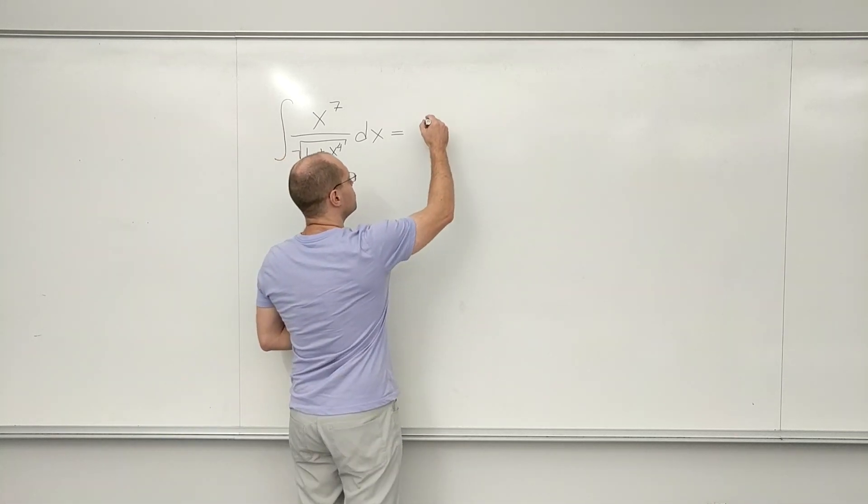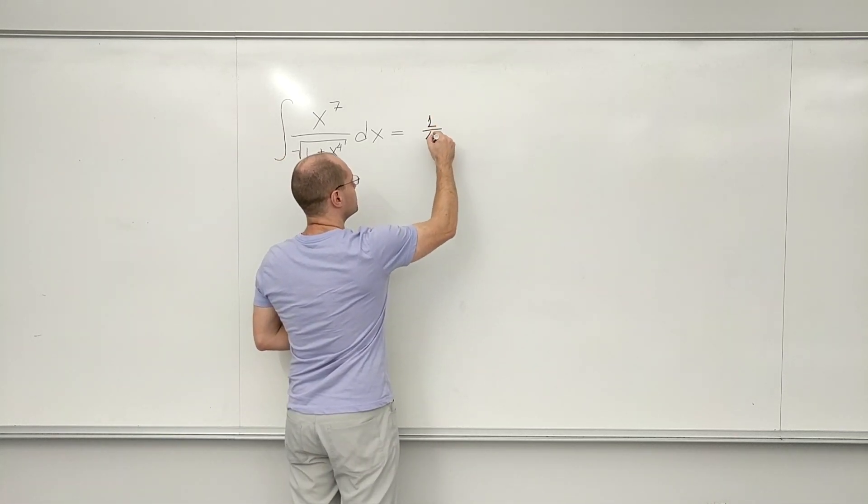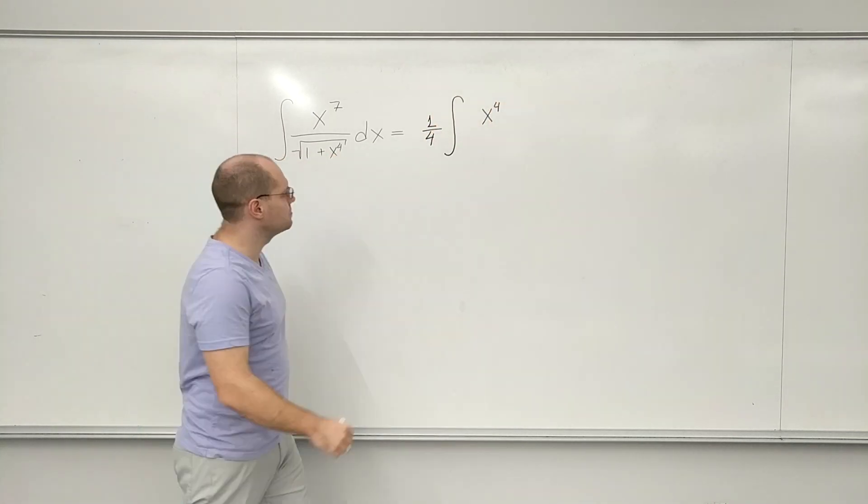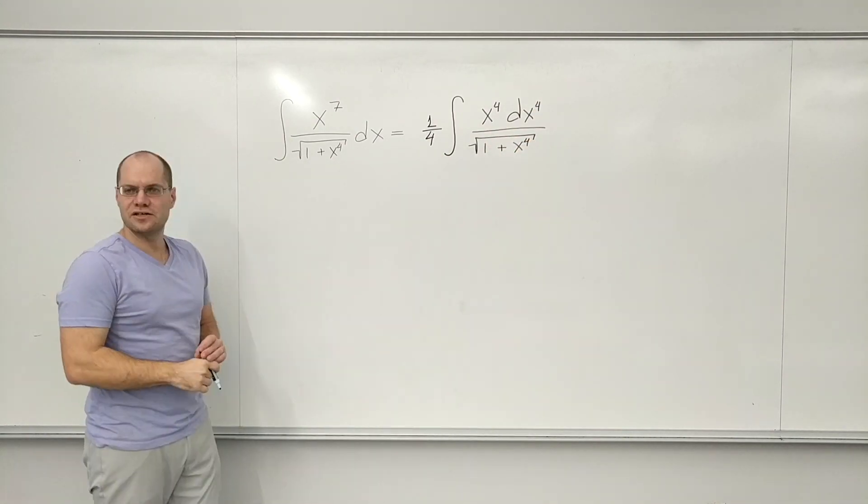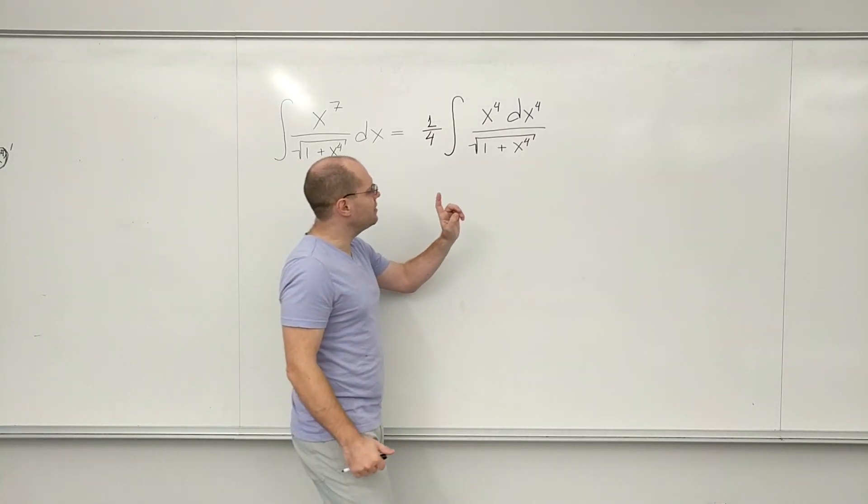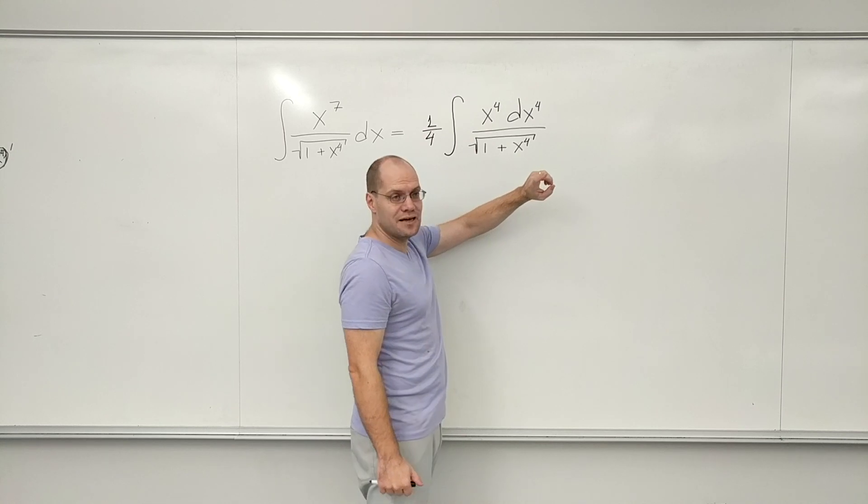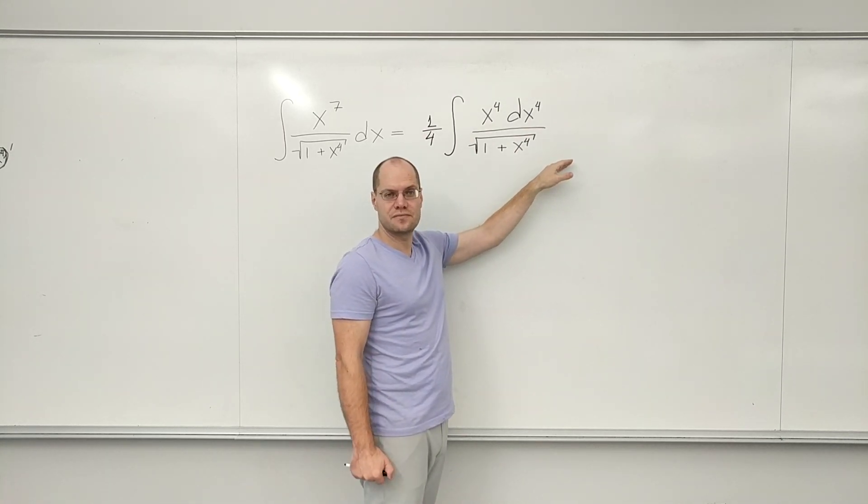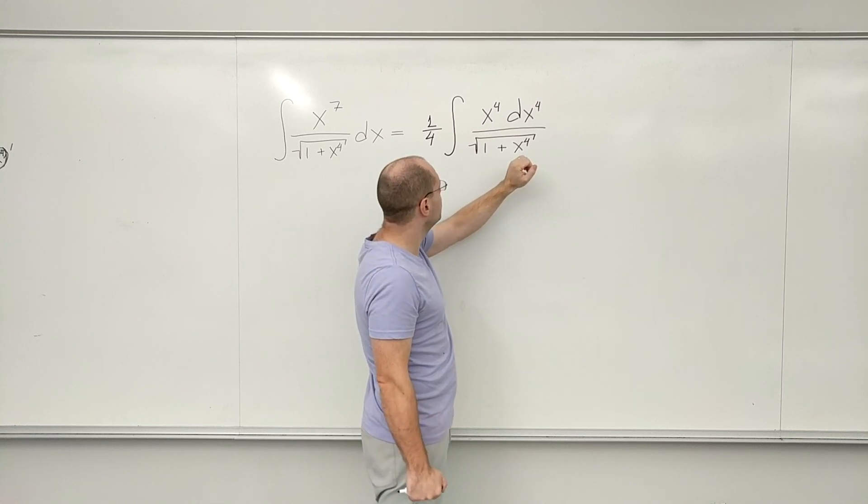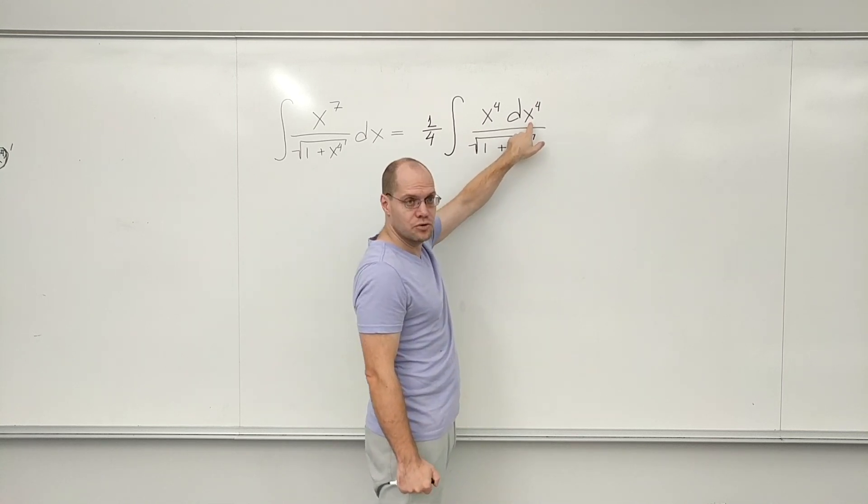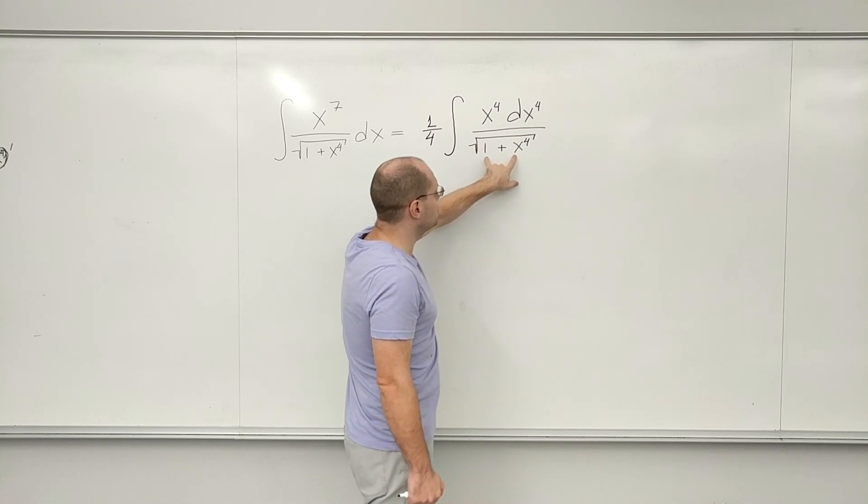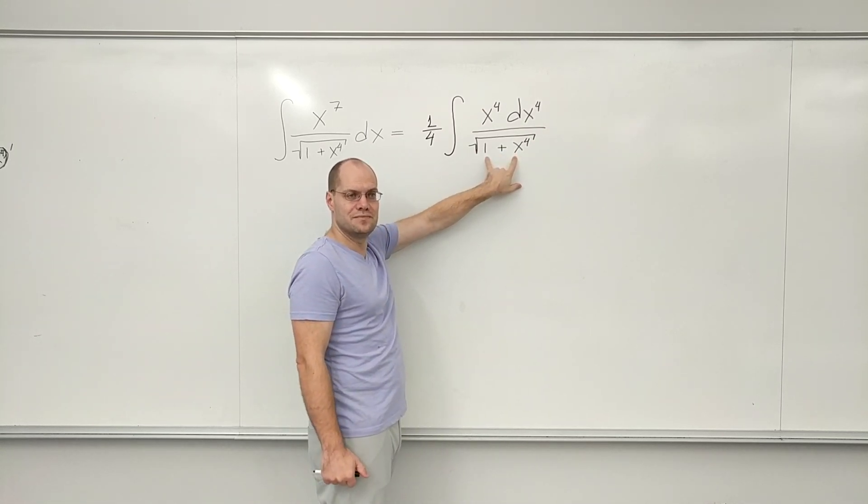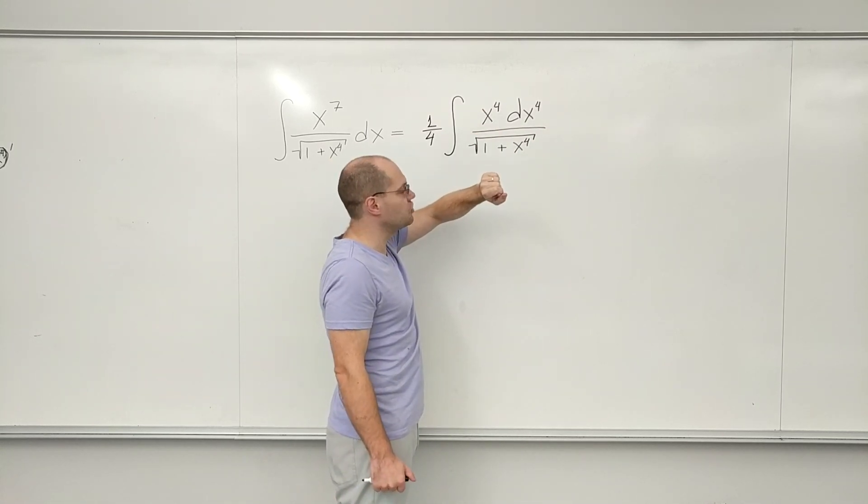Remember how we always do that adjustment factor? So, my next step would be that one quarter, and then, once again, I'm seeing that more algebraic work will be necessary. Okay, so we can do one of two things. We can either call this u, and this is the square root of u plus one, and this is u.